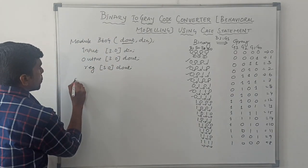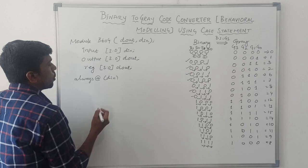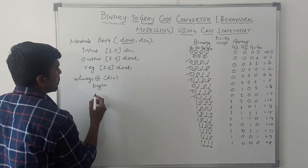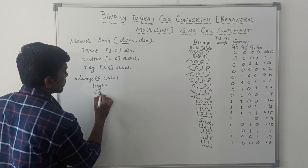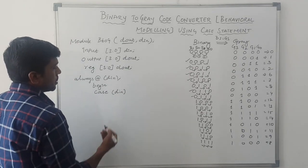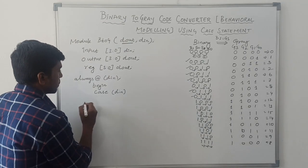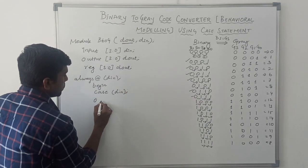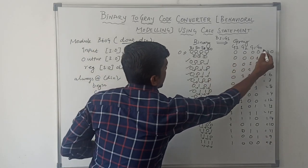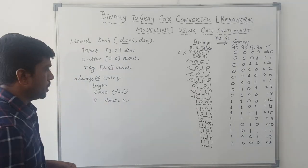The input and output values are both in vector format. Since it is a behavioral model, I use always @(din) — the whole operation is based on the din value. Then begin the operation. After begin, I declare the case statement: case(din). So after case(din), I assign each binary value to its gray code equivalent. The first value: 0 — dout equals 0.